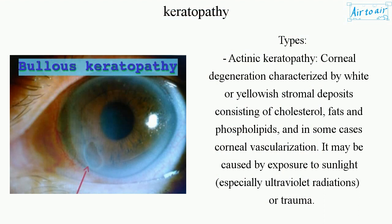Types. Actinic keratopathy: corneal degeneration characterized by white or yellowish stromal deposits consisting of cholesterol, fats, and phospholipids, and in some cases corneal vascularization. It may be caused by exposure to sunlight, especially ultraviolet radiation, or trauma.